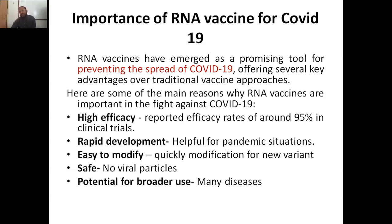RNA vaccines have emerged as a promising tool for preventing the spread of COVID-19, offering several key advantages. First, high efficacy — reported efficacy rates of more than 95% in clinical trials. Second, rapid development, which is helpful for pandemic situations. Third, easy to modify — when new variants emerged causing second and third waves, the vaccine could be quickly modified to target the new variant.